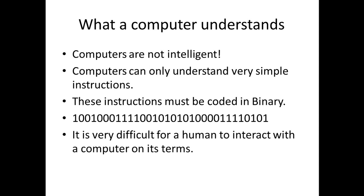To think about what a computer understands — the first thing you need to know is that computers are not intelligent. Many people think they are, but they are in fact very, very simplistic machines and they cannot think for themselves. They can only do what they are programmed to do by a computer programmer, so they can only understand very simple instructions: they can move data around, add data, subtract data, and sometimes do multiplies and divides. Anything beyond that requires lots of combinations of these simpler instructions.